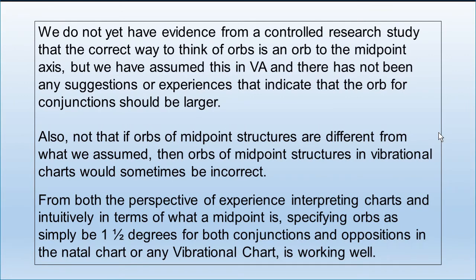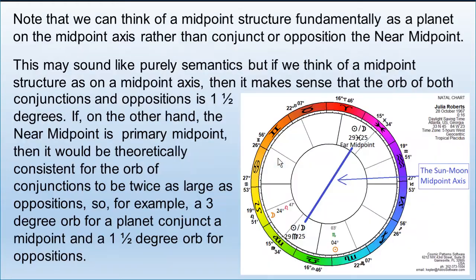We do not have evidence from controlled research studies clearly confirming what the orb is. We do extreme case sampling studies — we look at people who have the most of something in their charts, a certain talent or skill, and see if we can build a model consistent with their lives. We haven't tested the orbs carefully to see whether, for example, Jupiter conjunct the Sun-Moon midpoint makes a person Jupiterian in a positive way, since the Sun-Moon midpoint is an integrating point.